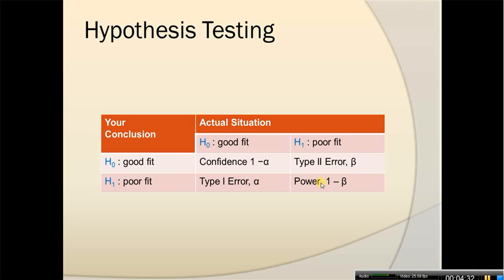We also talk about error, which is when the actual situation and our conclusion disagree. In the example where the actual situation is that the distribution is a poor fit, but we determine it to be a good fit, we're making a type 2 error, denoted as beta. On the other hand, it might be that the distribution is actually a good fit, but we make an erroneous conclusion and decide it's a poor fit. In that case, we're making a type 1 error, and that's alpha — the significance level of our test.